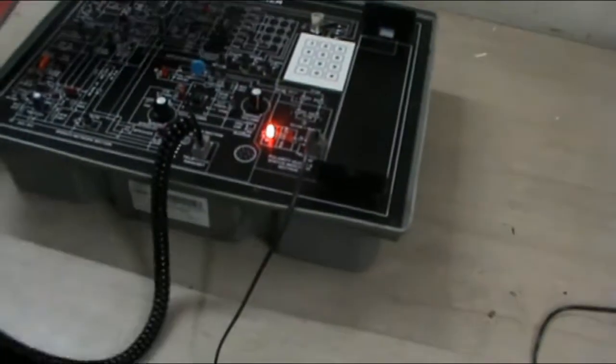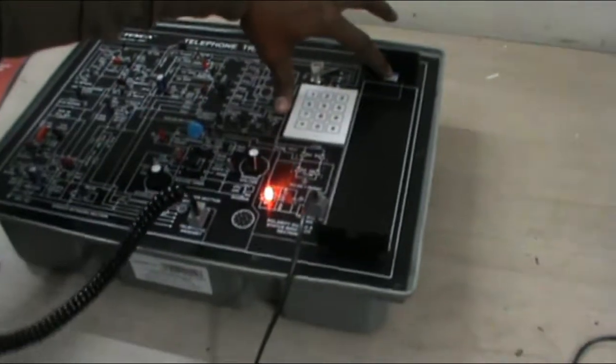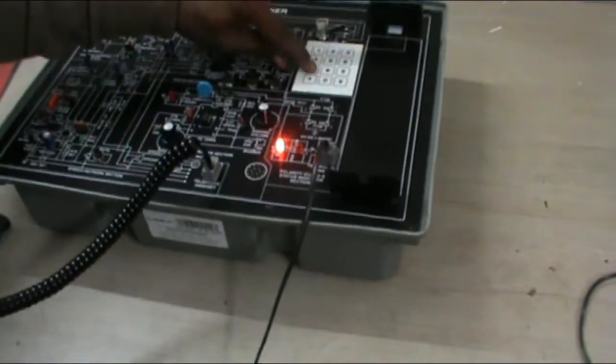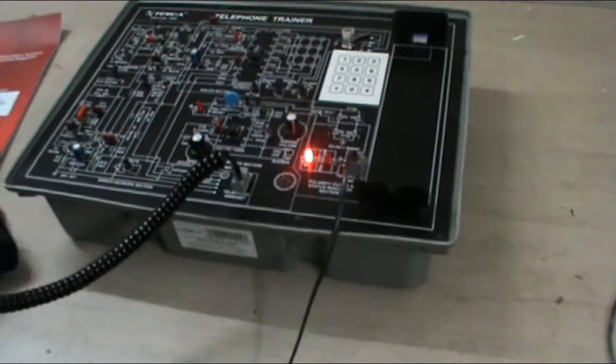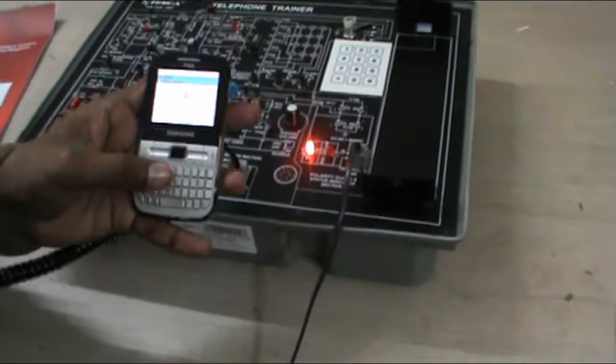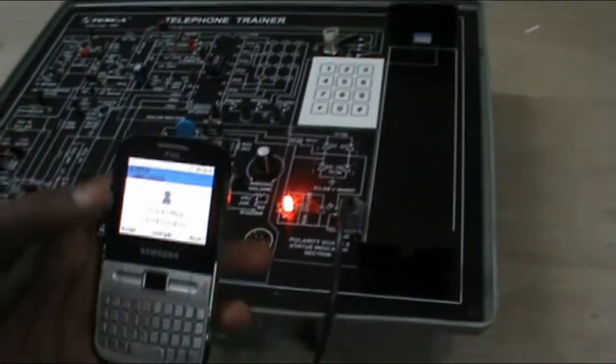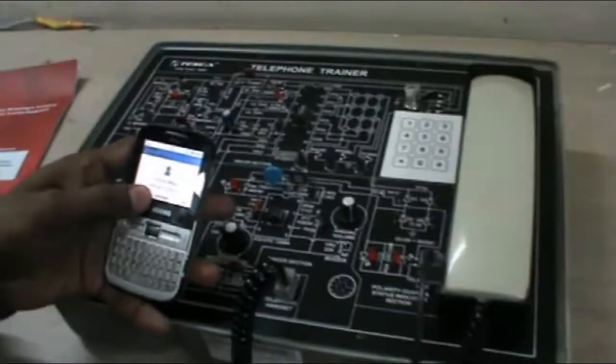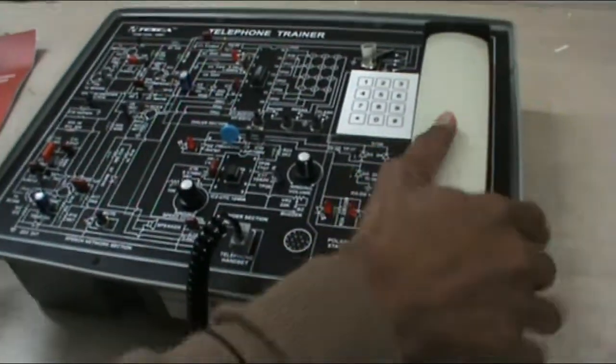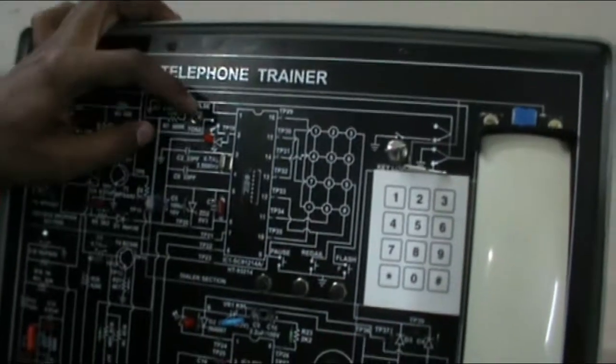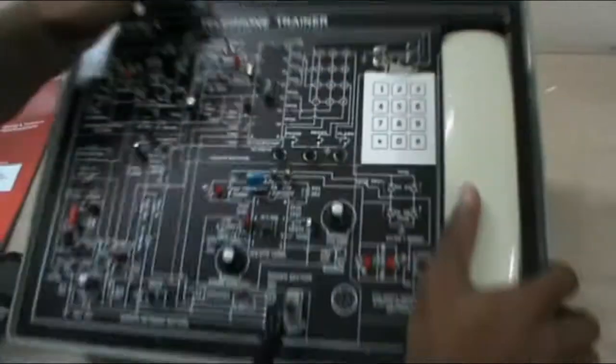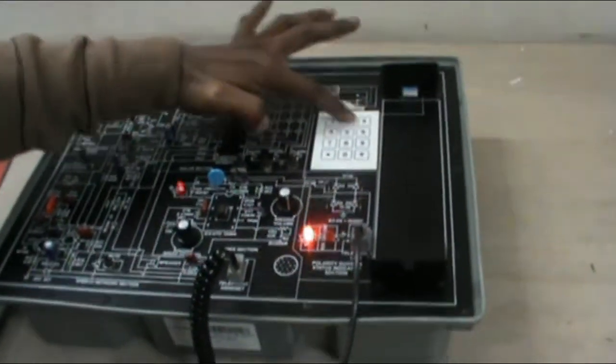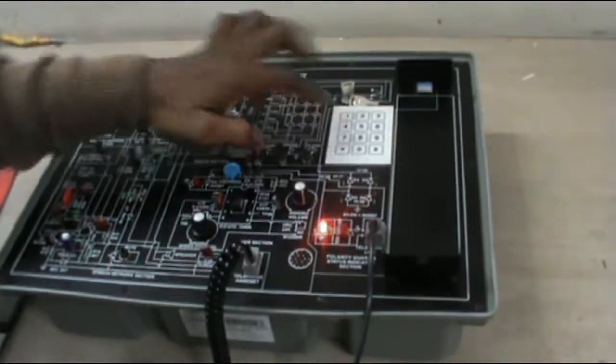To dial a number, just pick up the handset and dial a number. You can select your dialing mode: pulse dialing and tone dialing. When you put the switch to pulse dialing mode, it operates in pulse dialing mode.